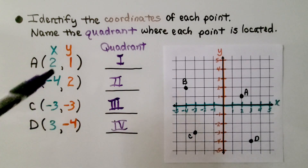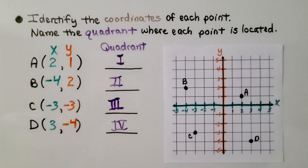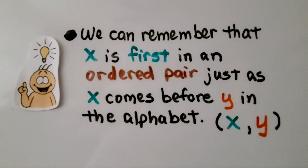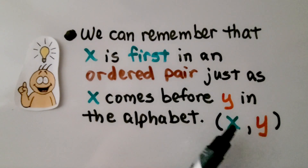We write the x-coordinate first, then the y-coordinate. We can remember that x is first in an ordered pair just as x comes before y in the alphabet — x, y — just like the order of the alphabet.